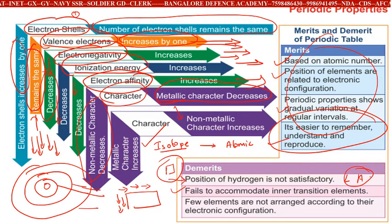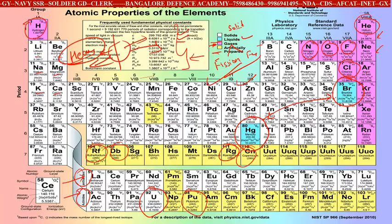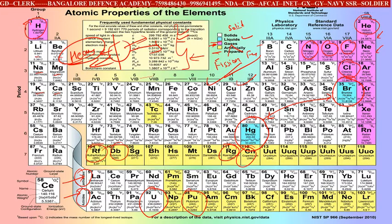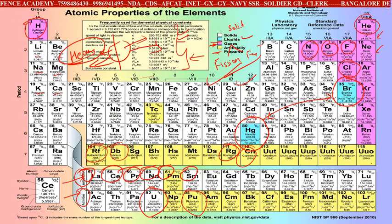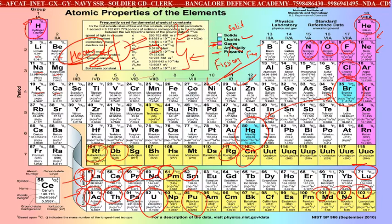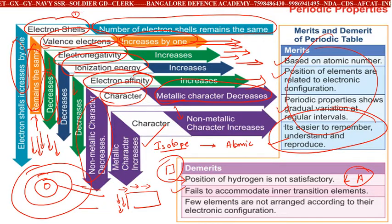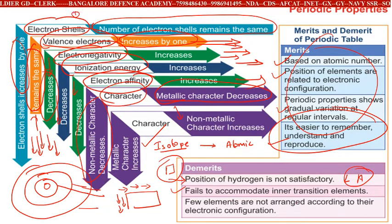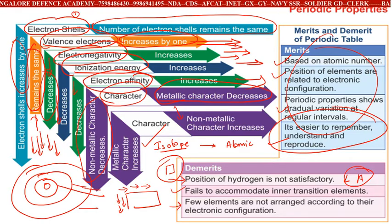Isotope means same atomic number but different atomic mass number. Hydrogen has three isotopes: deuterium, tritium, and hydrogen. The periodic table also fails to accommodate inner transition elements — lanthanides (57 to 71) and actinides (89 to 103) — which need a separate section. Some elements are not arranged according to their electronic configuration. These are the merits and demerits of the periodic table.